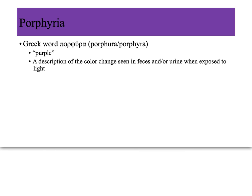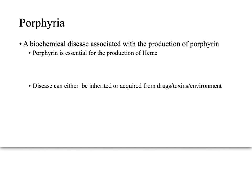With porphyria, you have changes in the color of the feces and the urine when it's exposed to light. Porphyria is simply a biochemical disease, and it's associated with the production of porphyrin. So what is porphyrin? If you remember lectures on hemoglobin, porphyrin is one of the essential ingredients of hemoglobin.